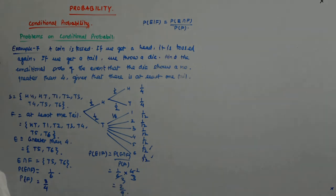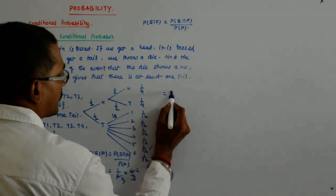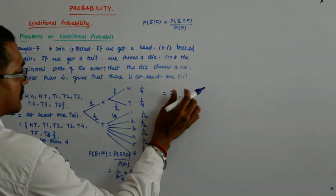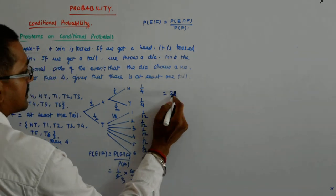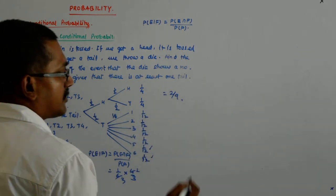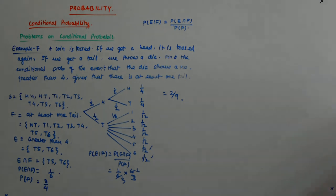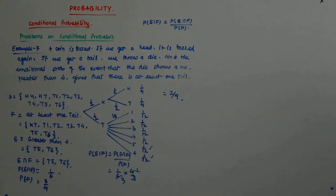The answer is 2 by 9. This is 2 by 9. And this relates to the multiplication theorem on probability.